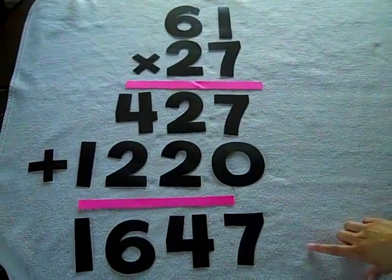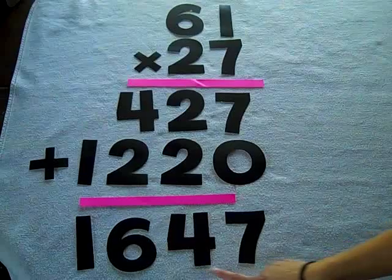The final product of your multiplication is 1,647.